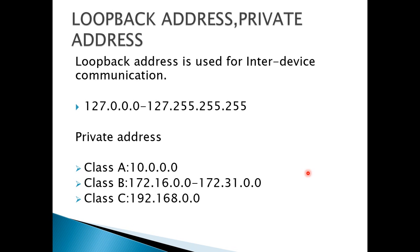Loopback address is mainly used for checking inter-device communication as well as network connectivity. We can check the network adapter through the loopback address to verify whether it is working or not. Anyone can make use of private addresses free of cost. The range of private address in a class A network is 10.0.0.0 to 10.255.255.255.